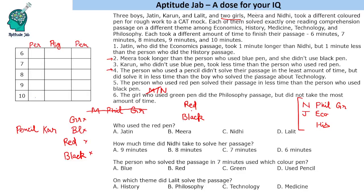The person who used the pencil didn't solve in the least amount of time, so Karun cannot be first. Karun also cannot be last because he took less time than the red pen person. So Karun can come at most in the middle positions — at least not first, and he must come before the red and black pen users.